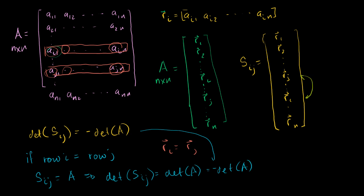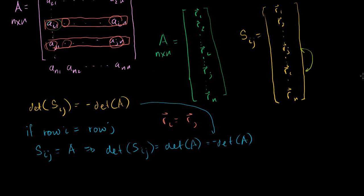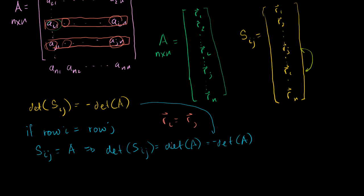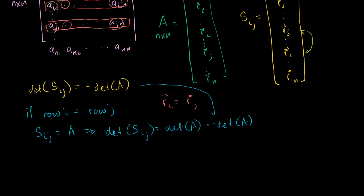So what does that tell us? That tells us if A has two rows that are equal to each other, if we swap them, we should get the negative of the determinant. But if those two rows are equal, we're going to get the same matrix again. So if A has two rows that are equal, then the determinant of A has to be equal to the negative of the determinant of A. We know that because the determinant of A, or A, is the same thing as the swapped version of A. And the swapped version of A has to have the negative determinant of A. So these two things have to be equal.